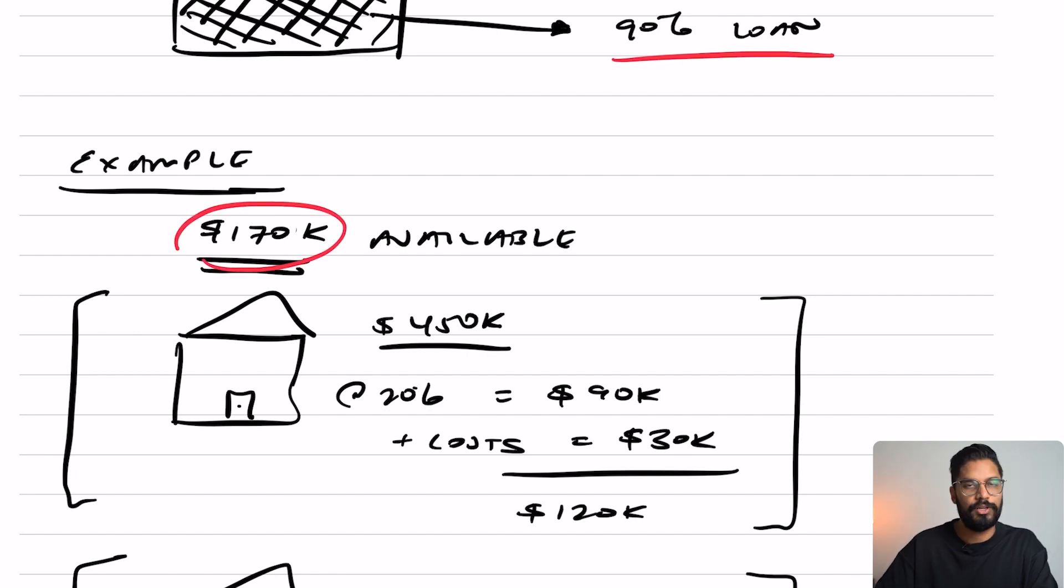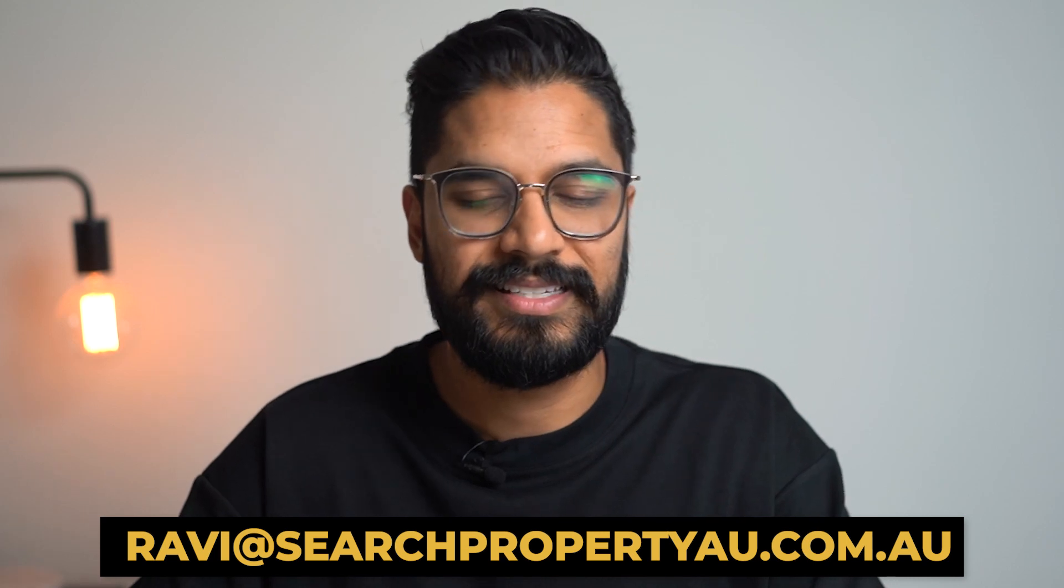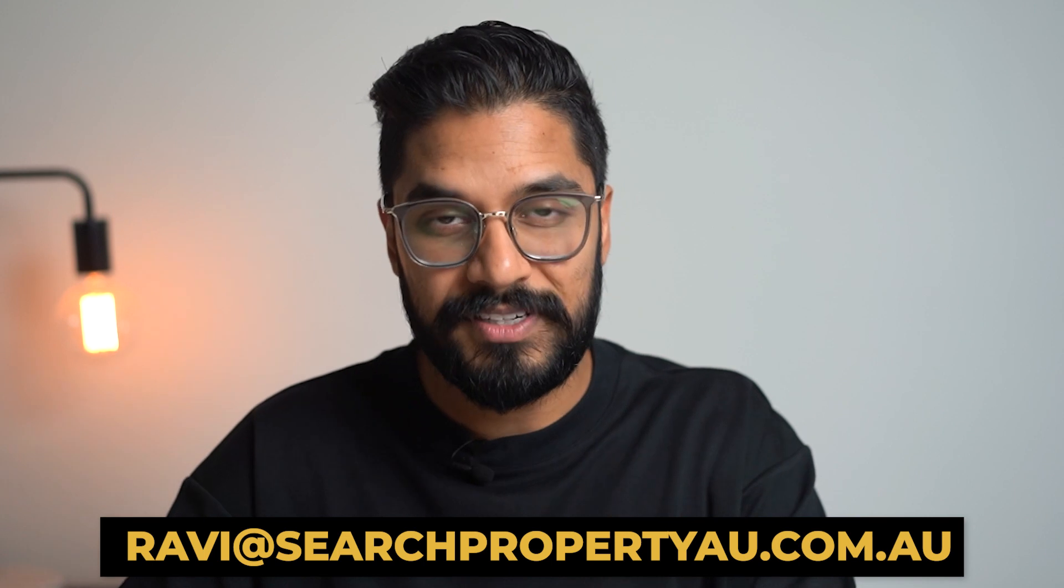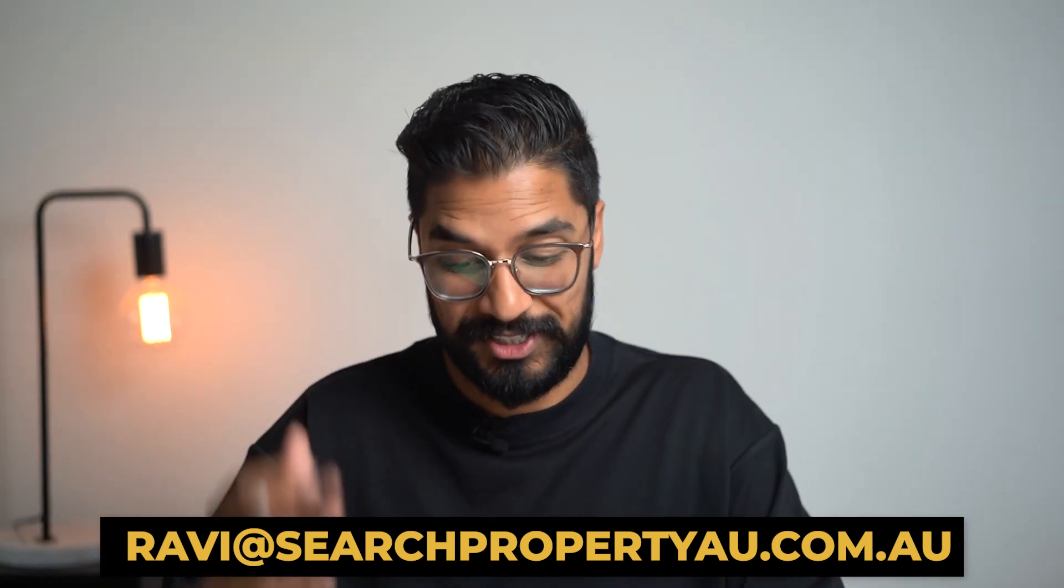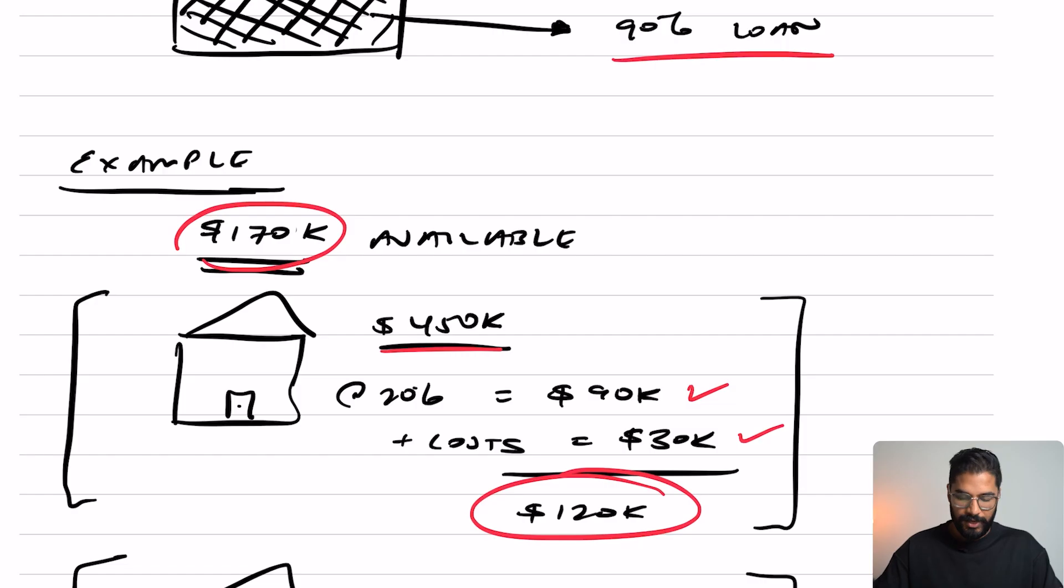Let's go ahead and look at an example. If you had $170,000 available today and you looked at a property for $450,000, then a 20% deposit on this would be $90,000. And if you include the costs, that would work out to be about $30,000. So your ultimate cost is going to be $120,000 to go ahead and purchase this one property. That would be option one.